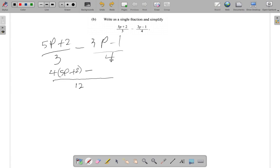So it's 4 times 5P plus 2 minus, 4 into 12 goes 3 times, 3 times all of this, 3 times 3P minus 1. Now if you multiply out, you're going to have 4 by 5P gives you 20P plus 4 times 2 is 8.